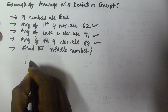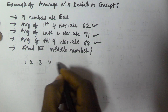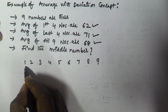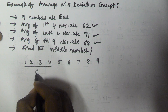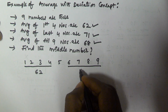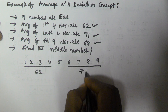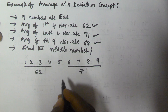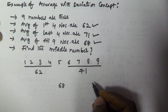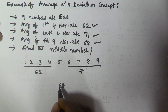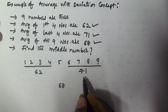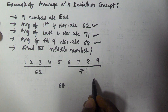Let us assume there are nine numbers: one, two, three, four, five, six, seven, eight, nine. The average of the first four numbers is 62, the average of the last four numbers is 71, and the average of all nine numbers is 68. As explained in the previous video, the average makes equal negative and positive deviations, meaning the sum of all deviations is zero.